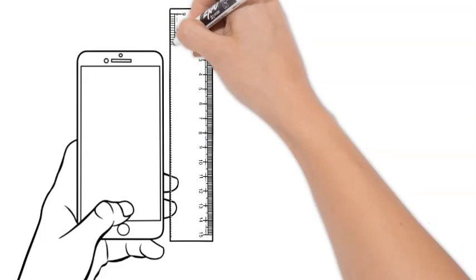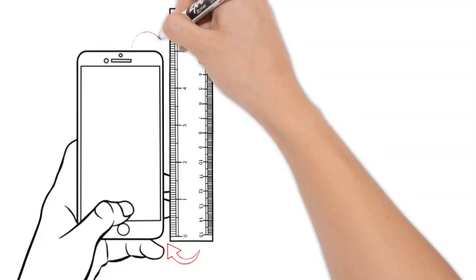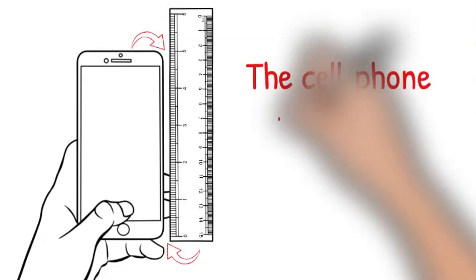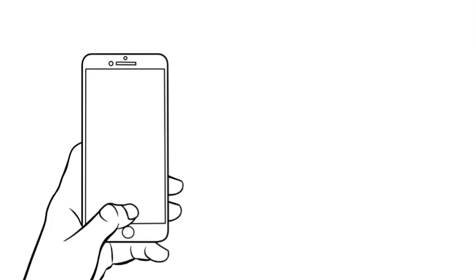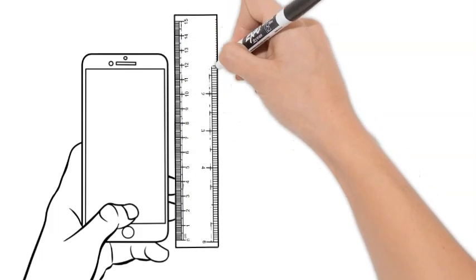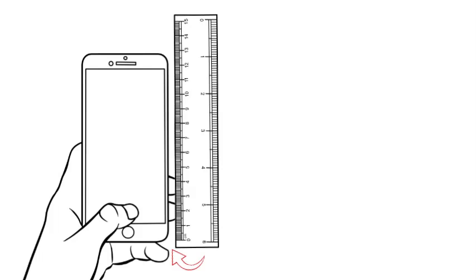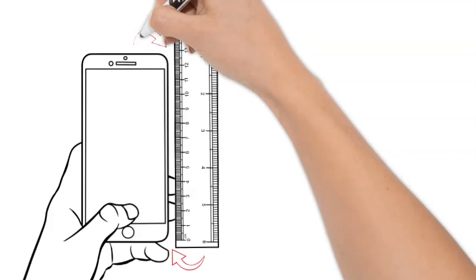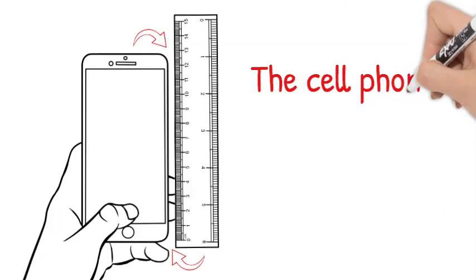Line up the zero on the ruler so your measurement is accurate. Count the inches and see where it ends. The cell phone is about five inches long. Now let's flip the ruler around to measure in centimeters. Line it up. The cell phone is about 13 centimeters long.